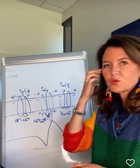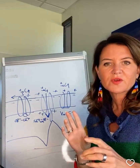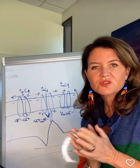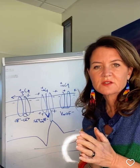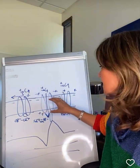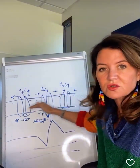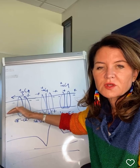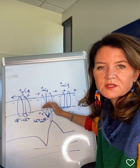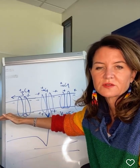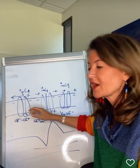So you have voltage-gated channels on your nerves. If this is a nerve, you send an electrical impulse down a nerve.